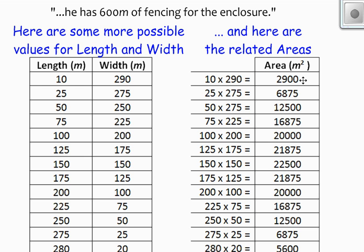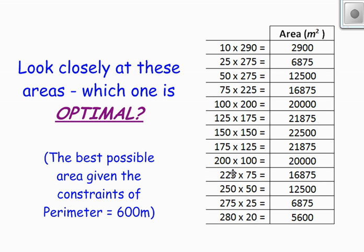So if you look closely at these areas, which one is optimal? In other words, which one is the best possible area given the constraints of having a perimeter equal to 600 meters? Well, again, we want the biggest area possible for our sheep. And so this one here is the biggest area we could get: 22,500. Now, to be sure that that's the maximum, I took the information that I had here.